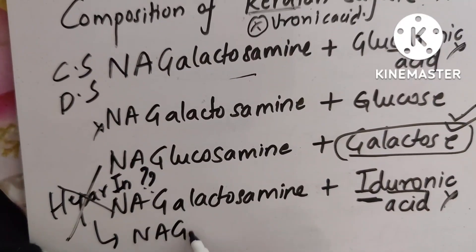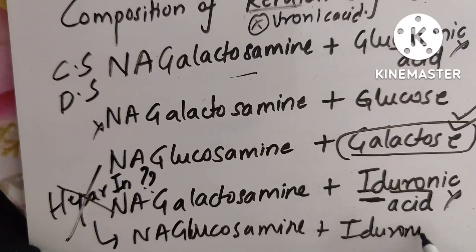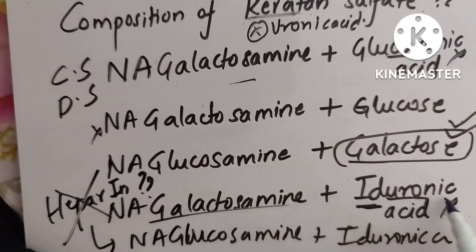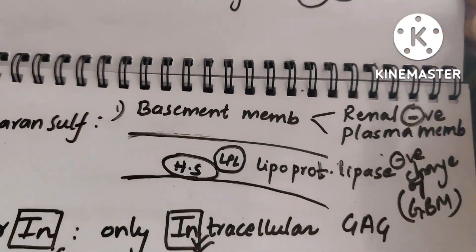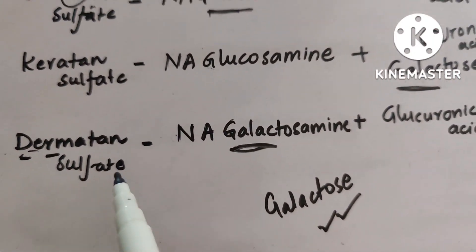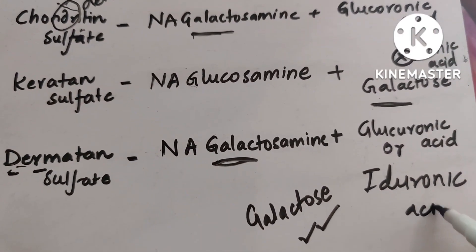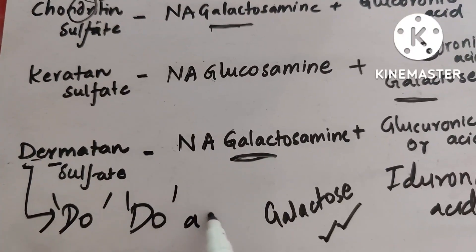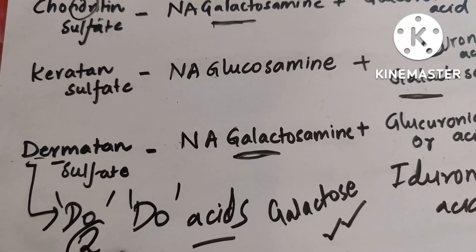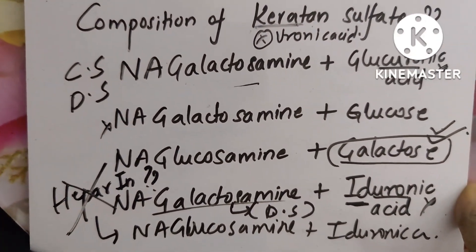Then what is option four? It is also dermatan sulfate. Remember: dermatan sulfate has N-acetyl galactosamine plus glucuronic acid, and sometimes iduronic acid too. So dermatan sulfate can have two acids — glucuronic and iduronic acid. This is an important new point: every time you solve questions you find new details about a topic, which is why question-solving is the most important activity.